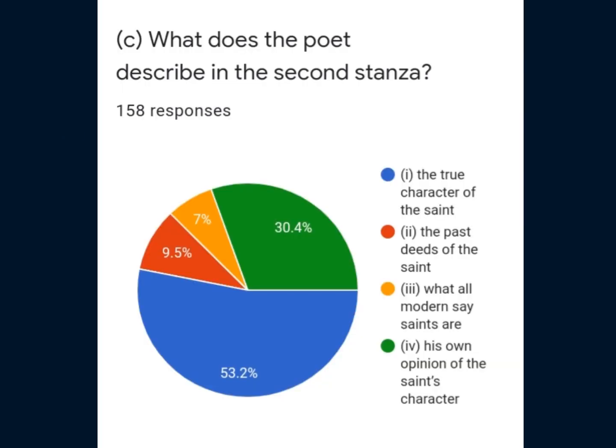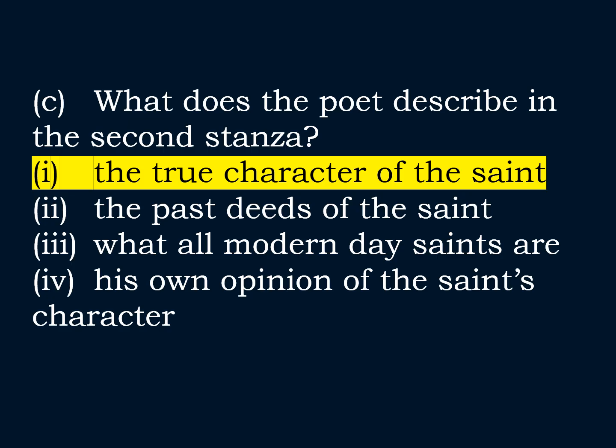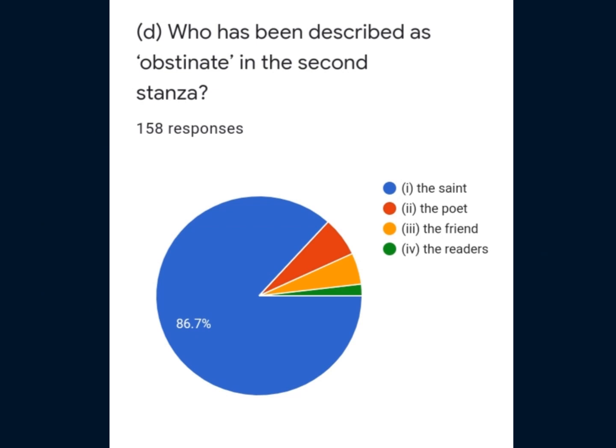This is Question 1, C part. What does the poet describe in the second stanza? Some students got confused between option 1 and option 4, but the correct answer is option 1: the true character of the saint. This is Question 1, D part. Who has been described as obstinate in the second stanza? The majority of students were able to find the correct answer: option 1, the saint.